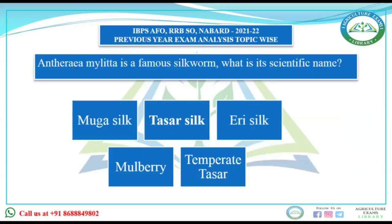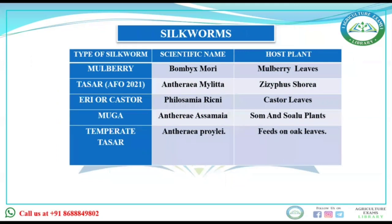Our next question: Antheraea mylitta is a famous silk — what is its scientific name? The options are mooga silk, tasar silk, mulberry silk, and temperate tasar. Mulberry silk's scientific name is Bombyx mori, and its host plant — the plant on which it feeds — is mulberry leaves. Antheraea mylitta's host plant is Asan/Saja.